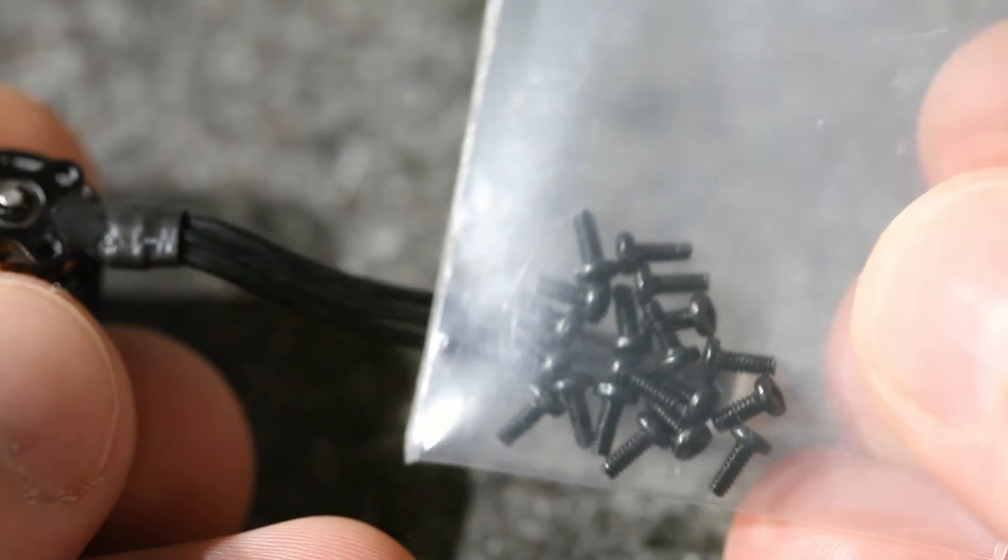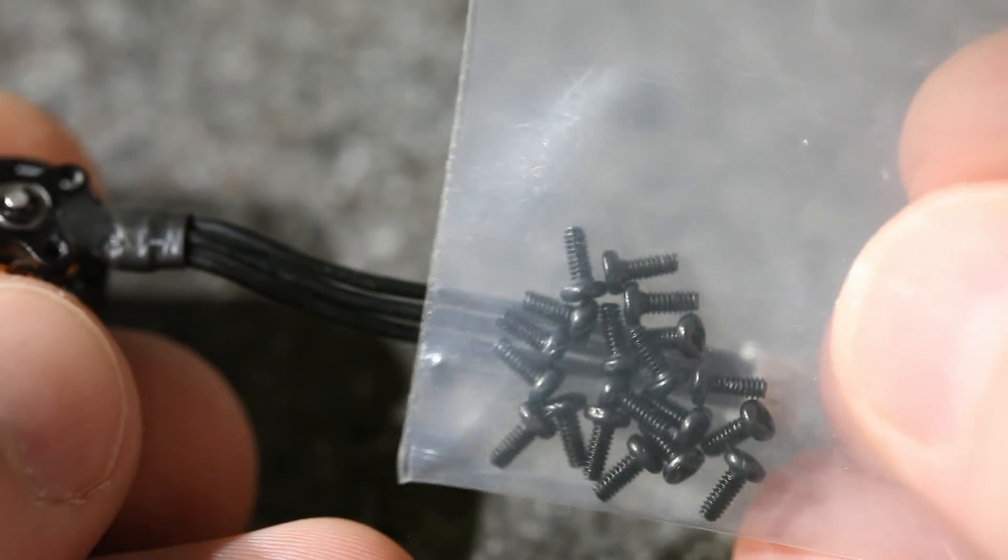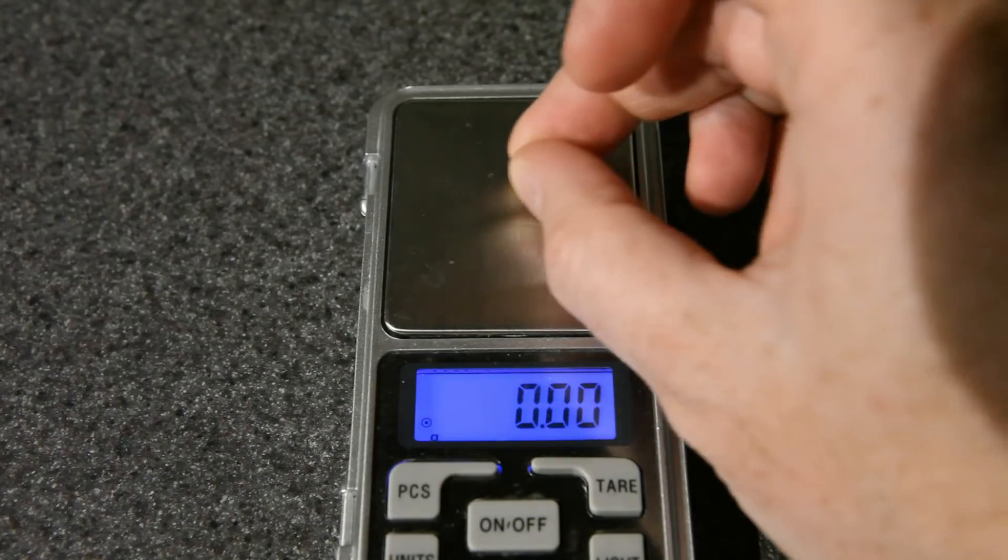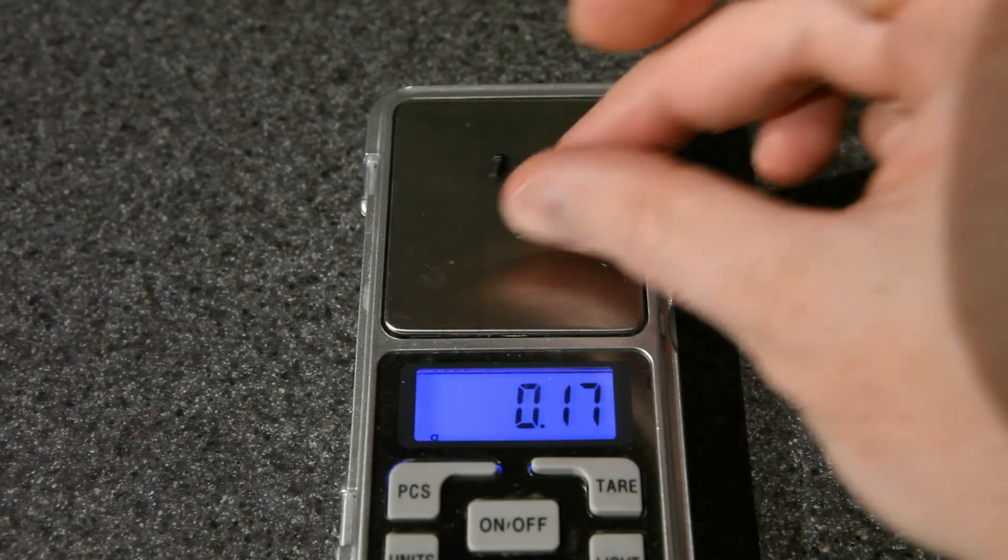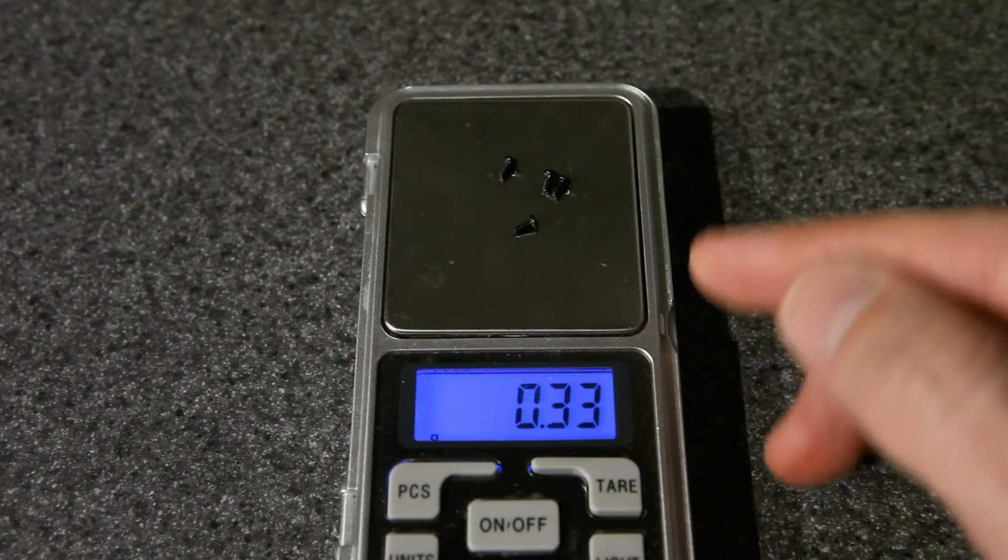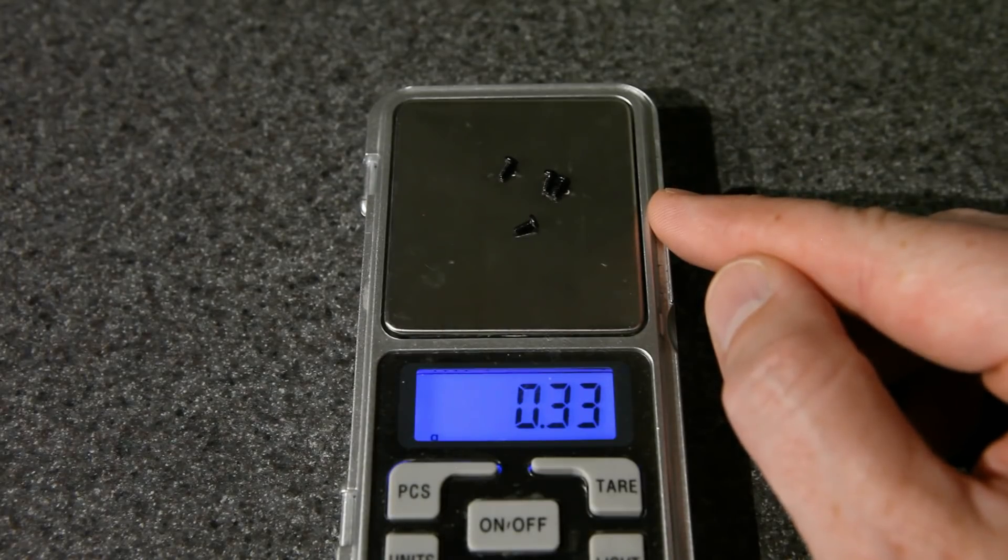Fortunately, mine came with 20 screws, which is more than enough to finish your build and have spares. I love it when companies include extra parts like this, so thank you BetaFPV. If you had four of these screws, it would add about a third of a gram to your build. I tend to use just two screws per motor when I put these in a whoop-style frame, and so I would have eight of them total. How many you use is up to you.